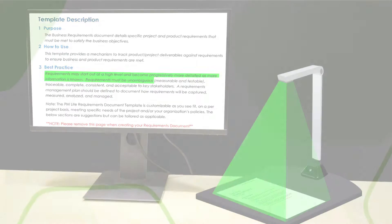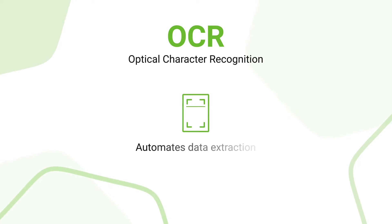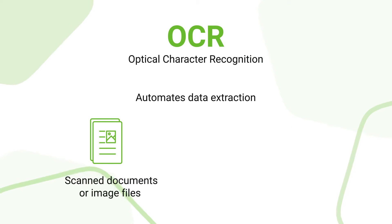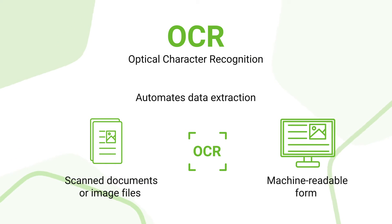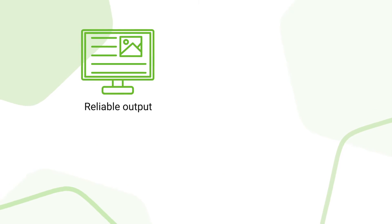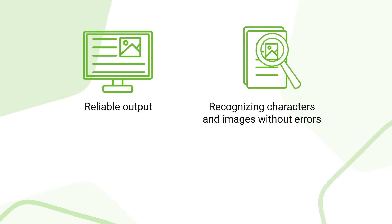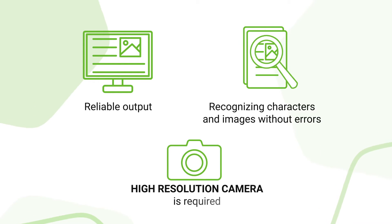Some document scanners also come with an OCR or Optical Character Recognition capability. OCR automates data extraction from scanned documents or image files and then converts the text into a machine-readable form to be used for data processing. To render a reliable output by recognizing characters without any error, OCR needs to deliver clear images, for which a high-resolution camera is required.